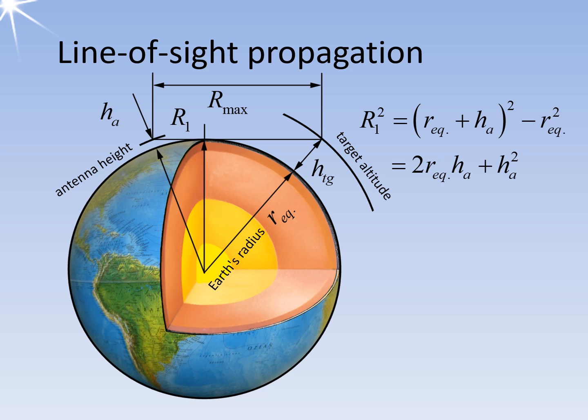Multiplying out the expression in brackets leaves two terms, as the positive and negative squares of the earth's radius cancel each other out. The height of the antenna, which is usually only a few meters, is negligible compared to the earth's radius and can therefore be ignored. This omission typically results in an error of less than one percent, which is within the range of deviations that occur when using only the mean earth's radius. The first part of the line of sight is therefore the square root of the product of twice the equivalent earth radius and the antenna height.